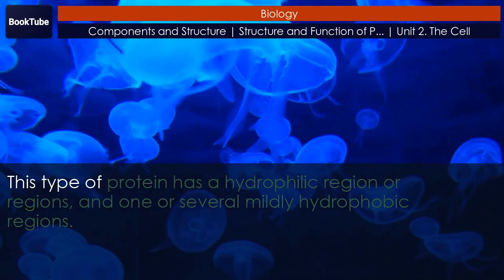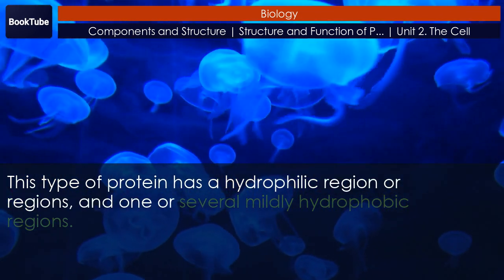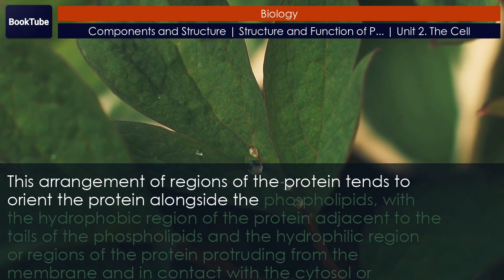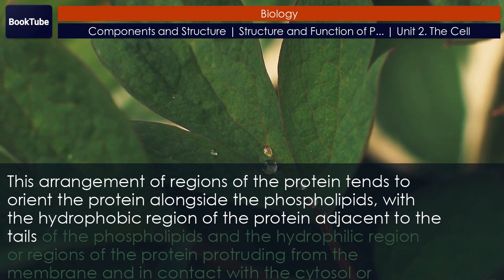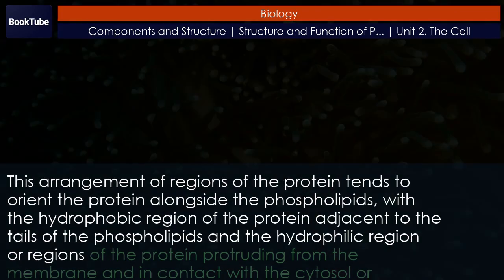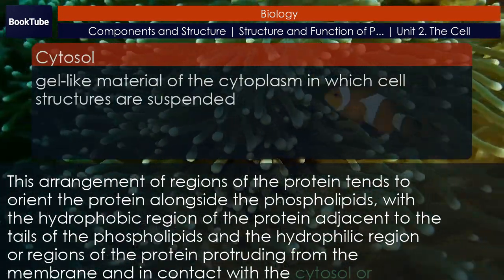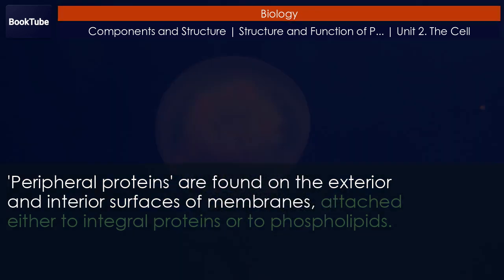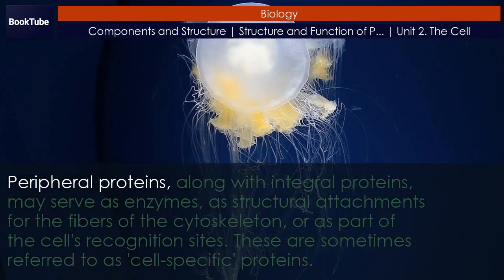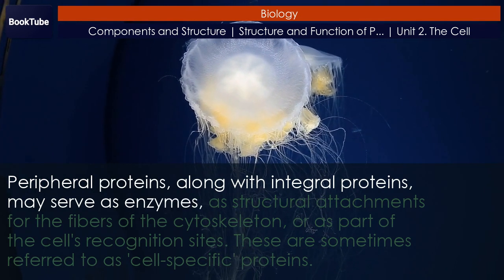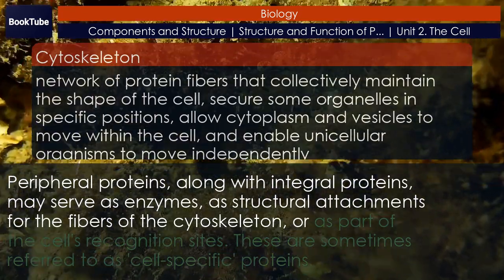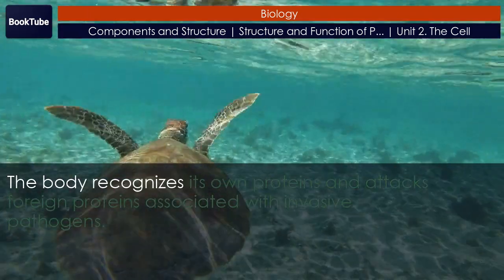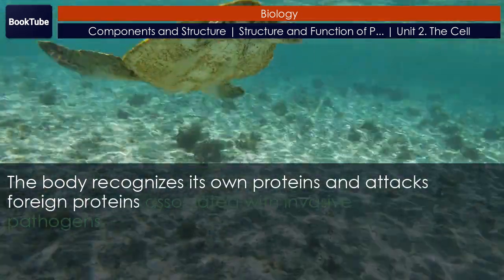This type of protein has a hydrophilic region or regions, and one or several mildly hydrophobic regions. This arrangement tends to orient the protein alongside the phospholipids, with the hydrophobic region adjacent to the tails of the phospholipids and the hydrophilic region protruding from the membrane in contact with the cytosol or extracellular fluid. Peripheral proteins are found on the exterior and interior surfaces of membranes, attached either to integral proteins or to phospholipids. Along with integral proteins, they may serve as enzymes, as structural attachments for the fibers of the cytoskeleton, or as part of the cell's recognition sites.